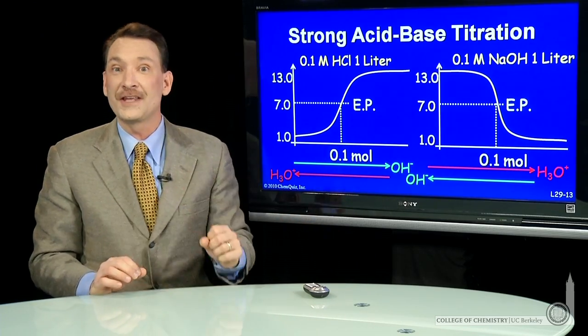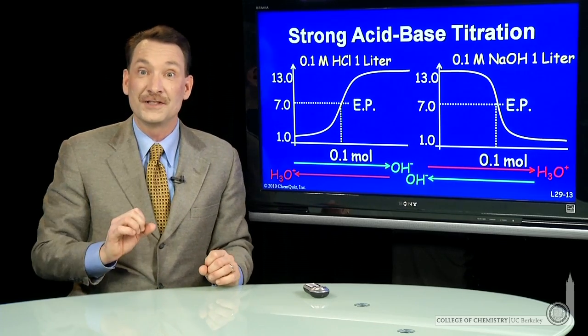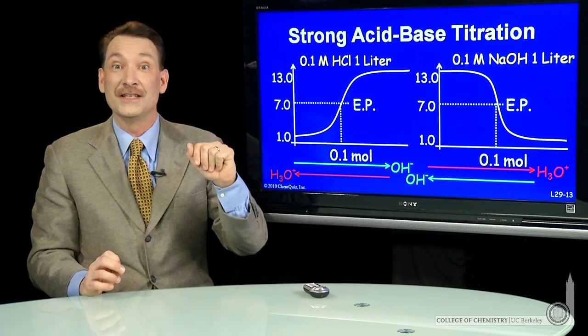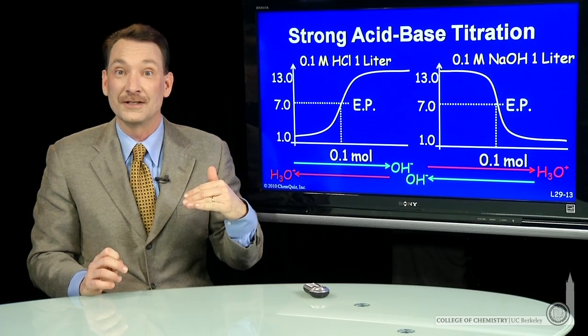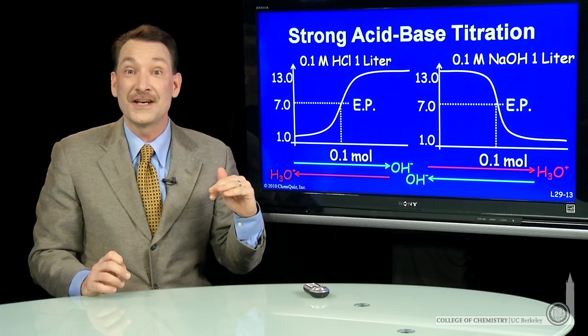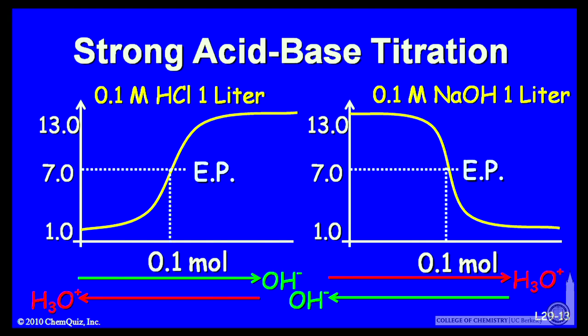Eventually, you'll use up all the acid that's there. If you continue to add base, then that base will dominate the pH and you'll have a basic solution. You can plot that in something called a titration curve, where you plot the pH of a solution versus the moles of acid or base that you add.